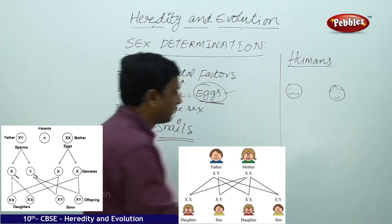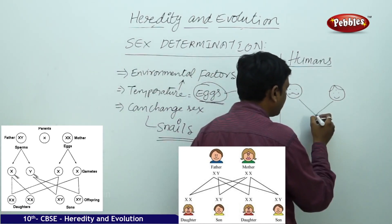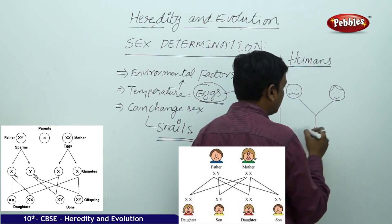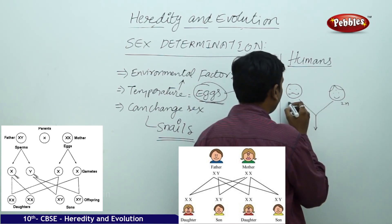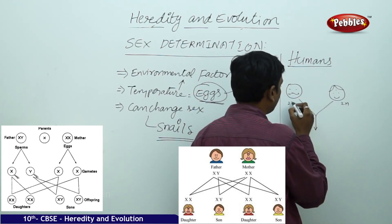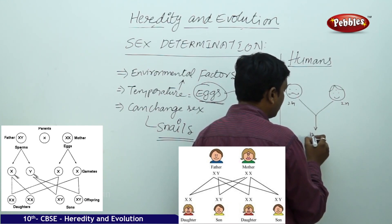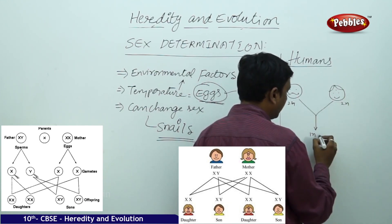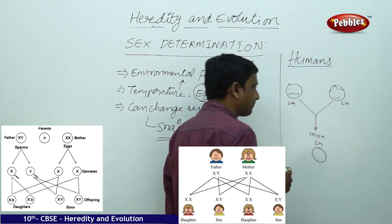During sexual reproduction, they each share one set. Both parents have two sets (2n each), and they each contribute one set (n), so the young one receives one n plus one n, giving two sets again. The young one will have two sets.